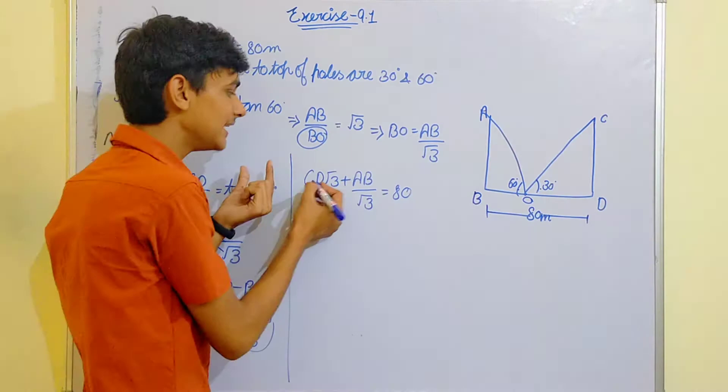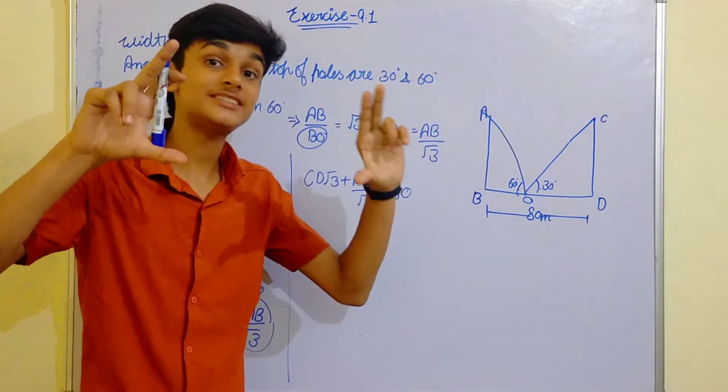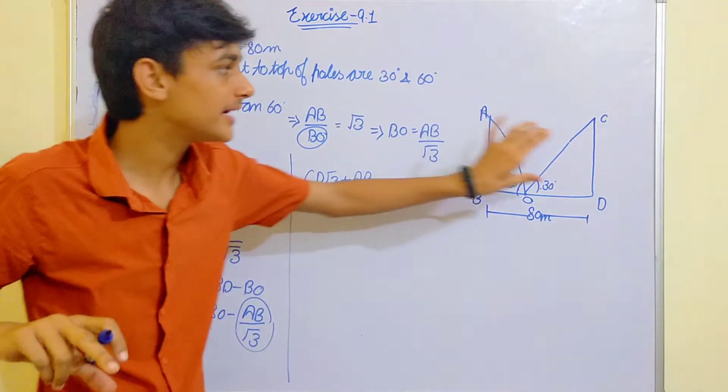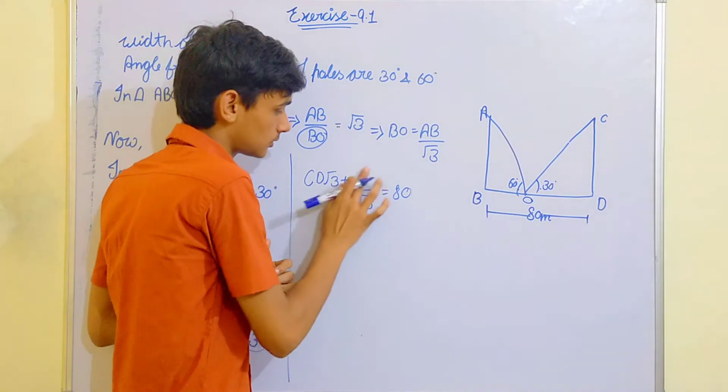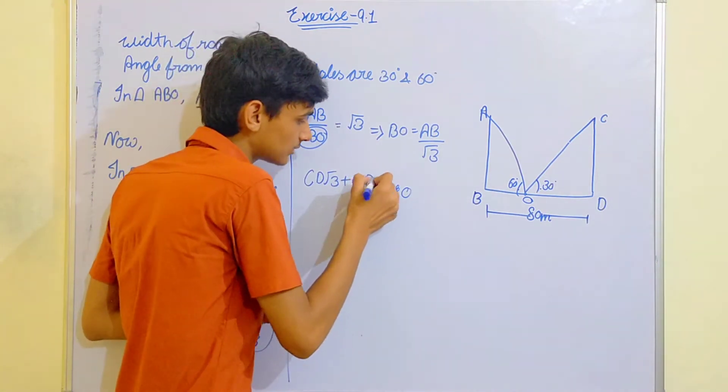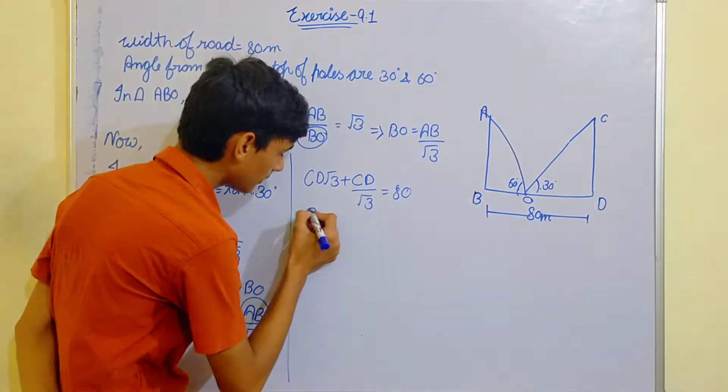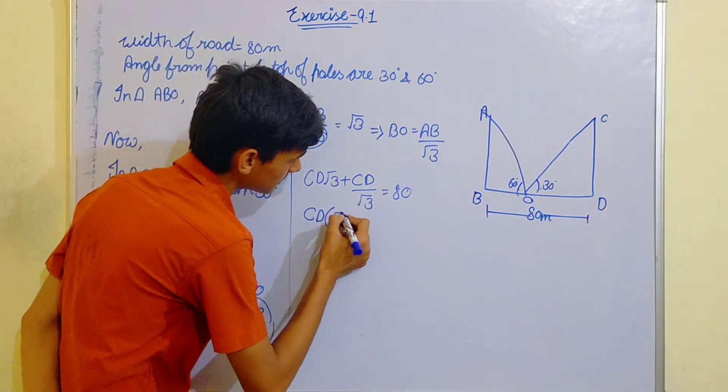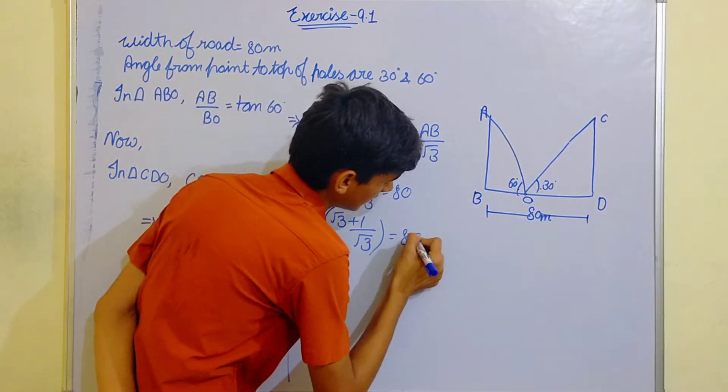Took this AB by root 3 on the left hand side. CD root 3 plus AB by root 3 is equals to 80. Now CD and AB are equal, question mentions the poles of the same height.